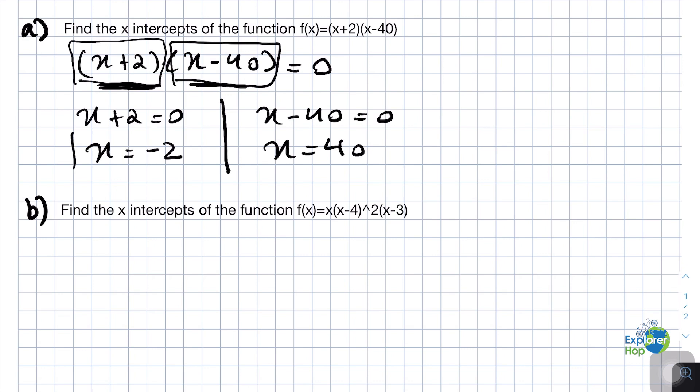So our x-intercepts would be x equals -2 and x equals 40. We can just write that down. So -2 and 40.